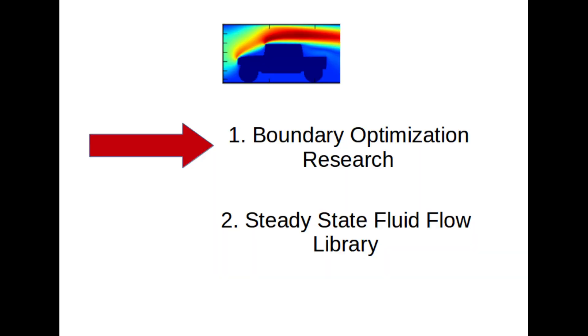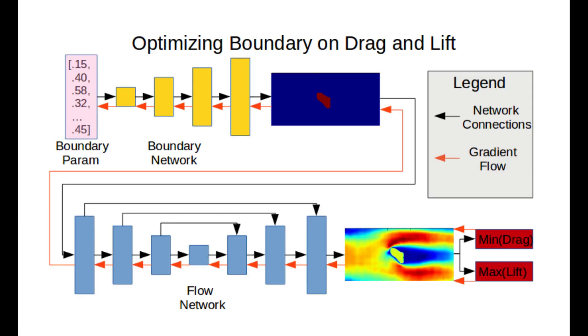There are two aspects of my project, the first being a research aspect. I am investigating techniques that make use of the differentiable nature of deep neural networks to optimize boundary conditions on things like drag and lift. Here we see a figure that illustrates this idea. The flow network predicts flow from boundaries. The boundary network generates a boundary from parameters. In this case, the params indicate height of the circle at various angles.